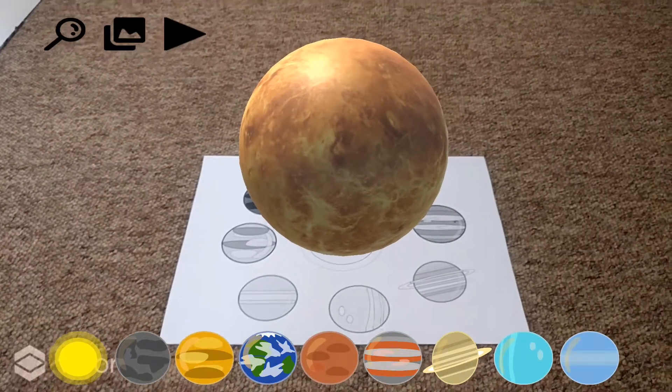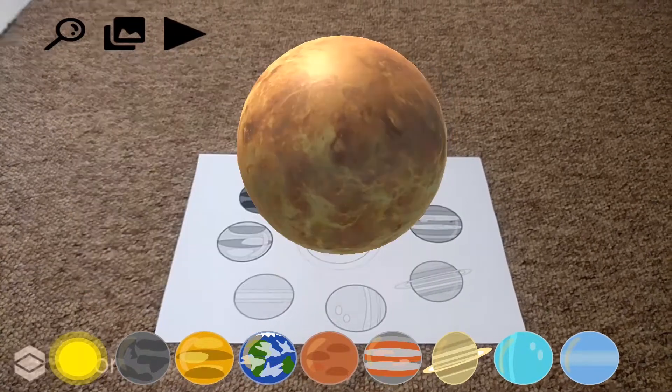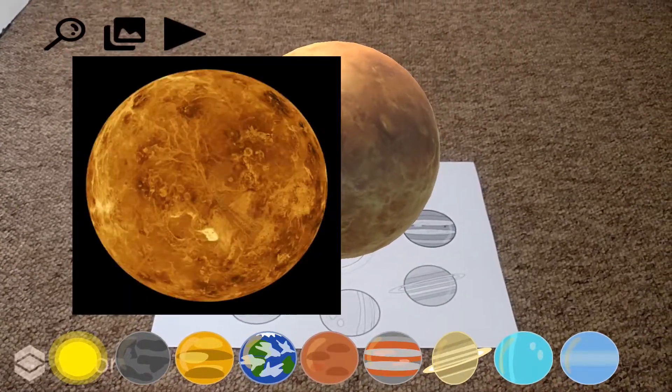While they can easily navigate through the application by tapping on different menu items at the bottom, they can also choose to find out more about the planet, look at an image and watch a video.